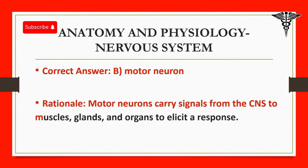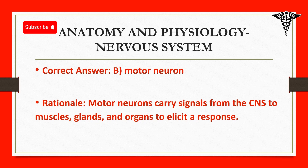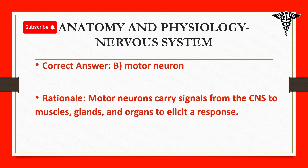Correct answer: B. Motor neuron. Rationale: Motor neurons carry signals from the CNS to muscles, glands, and organs to elicit a response.